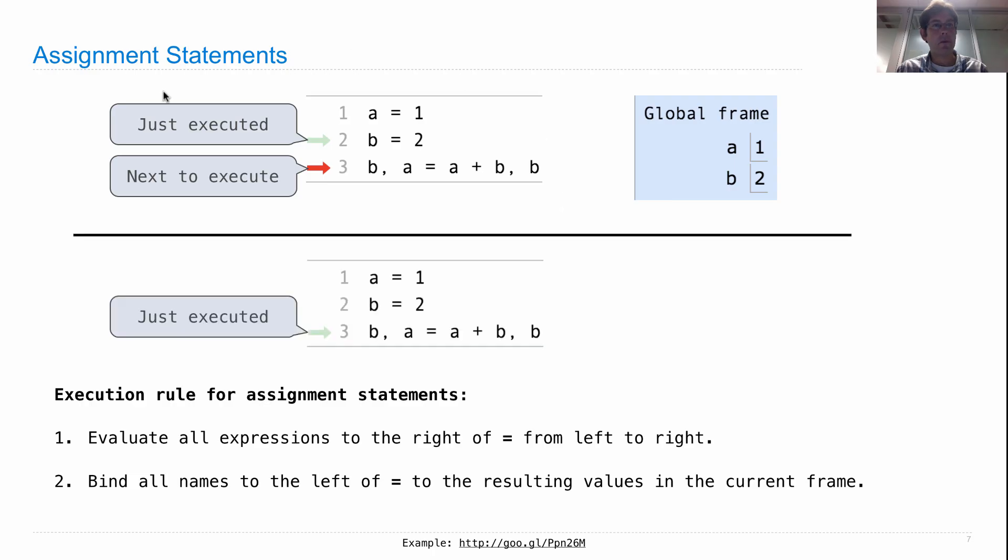So if we hit forward in the environment diagram generator, the just executed arrow will now be on line 3. And the global frame will have a bound to 2 and b bound to 3.